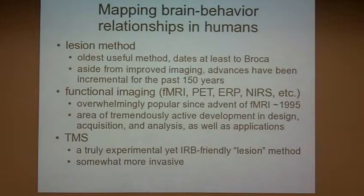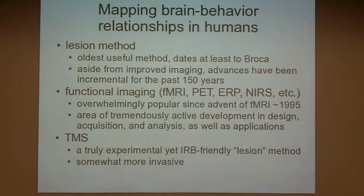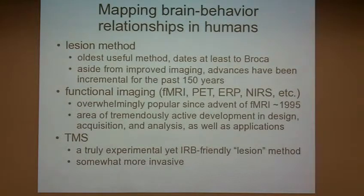Much more popular these days is functional imaging. fMRI came about in the early 90s and got really popular around 1995. There are lots of other functional imaging modalities, but if you go to cognitive neuroscience meetings or neuropsychology meetings there's lots of fMRI talk. It's an area of tremendously active development in experimental design, acquisition, analysis, and lately even in terms of real-world applications — though I'm not sure how good an idea that is.